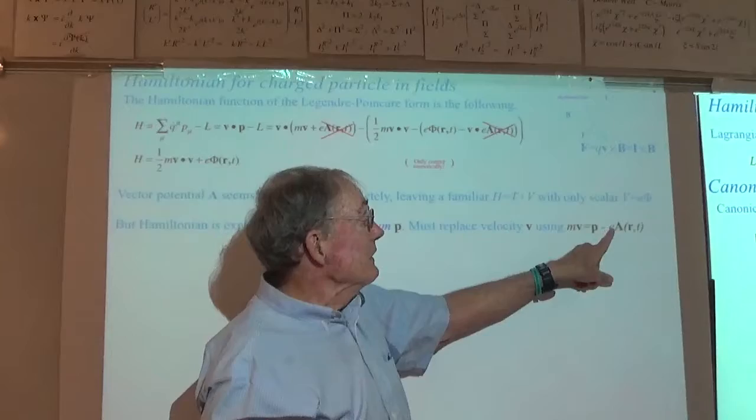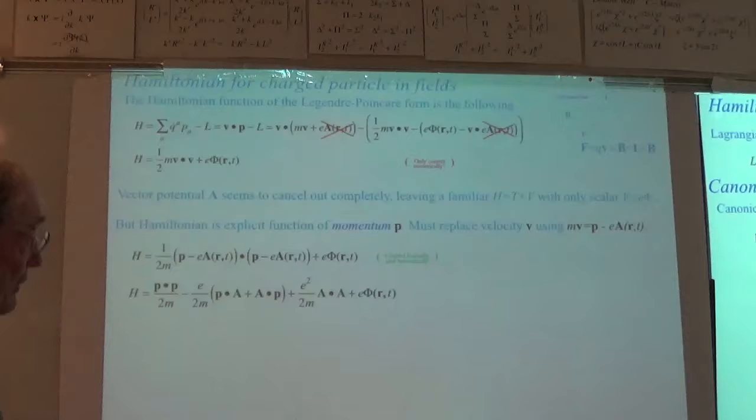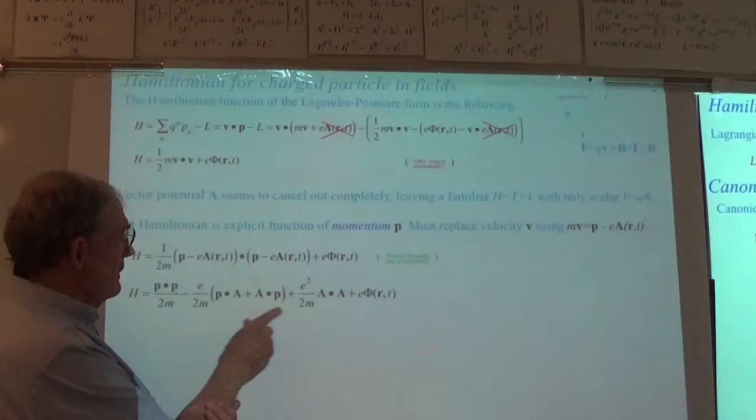Now we stick that in — now it's correct formally. So now it's up to us to check this thing and see if it gives us the equations of motion we started with. Here's our kinetic part, and here's this weird coupling that you deal with if you're going to play with Hamiltonians — the minimal coupling.